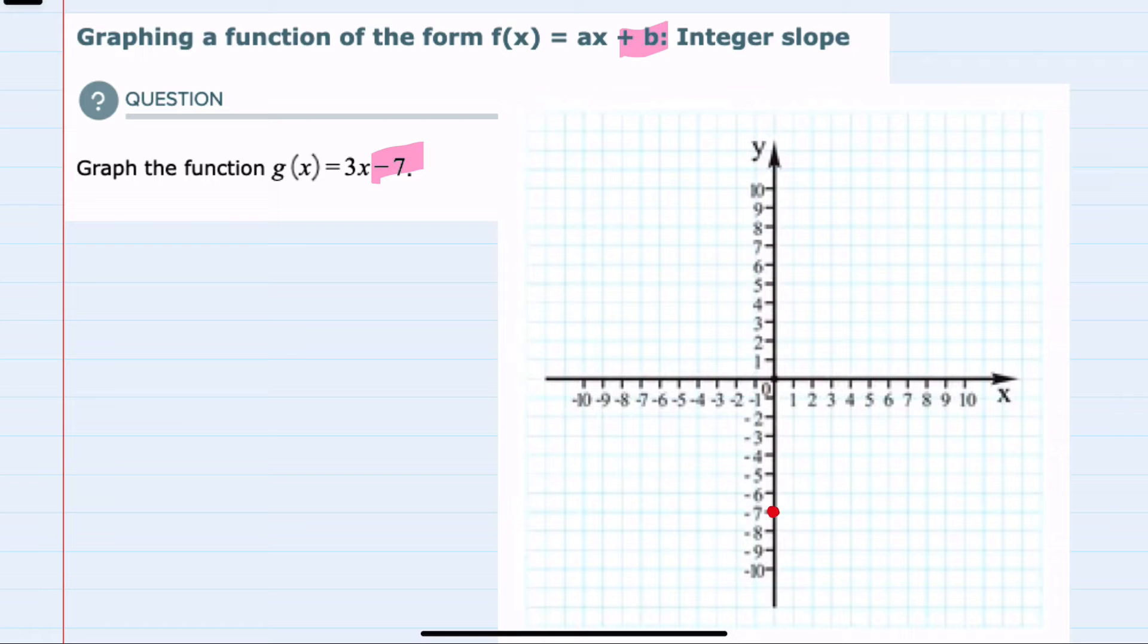From there I can use the slope, which here is 3. Since that slope m is the integer 3, in order to use it to graph this line I need to represent it as a fraction. So 3 I can say is 3 over 1, and since that is our rise over our run...